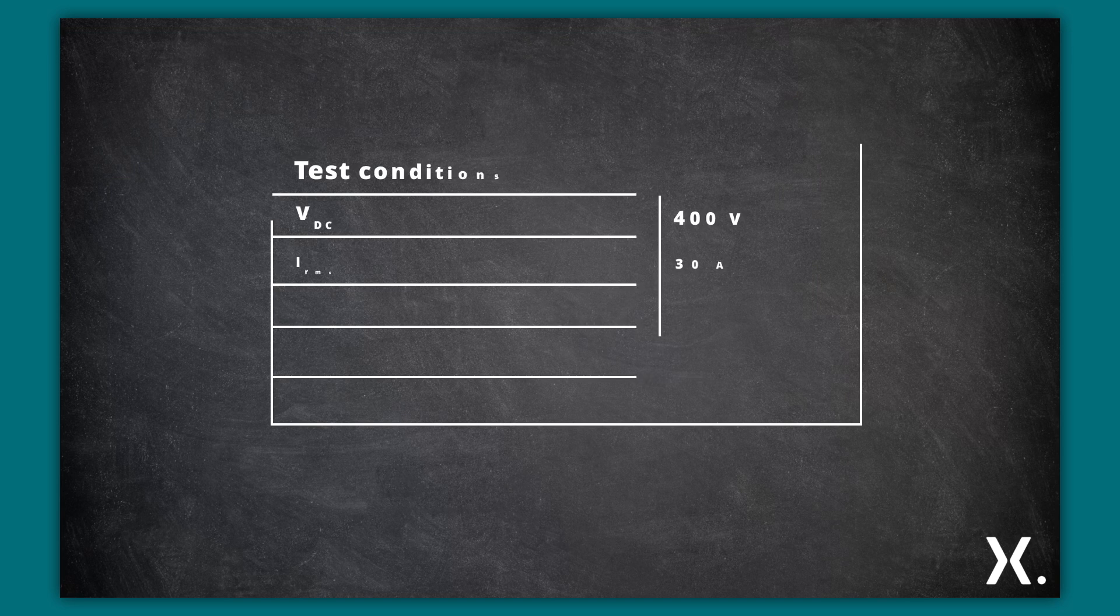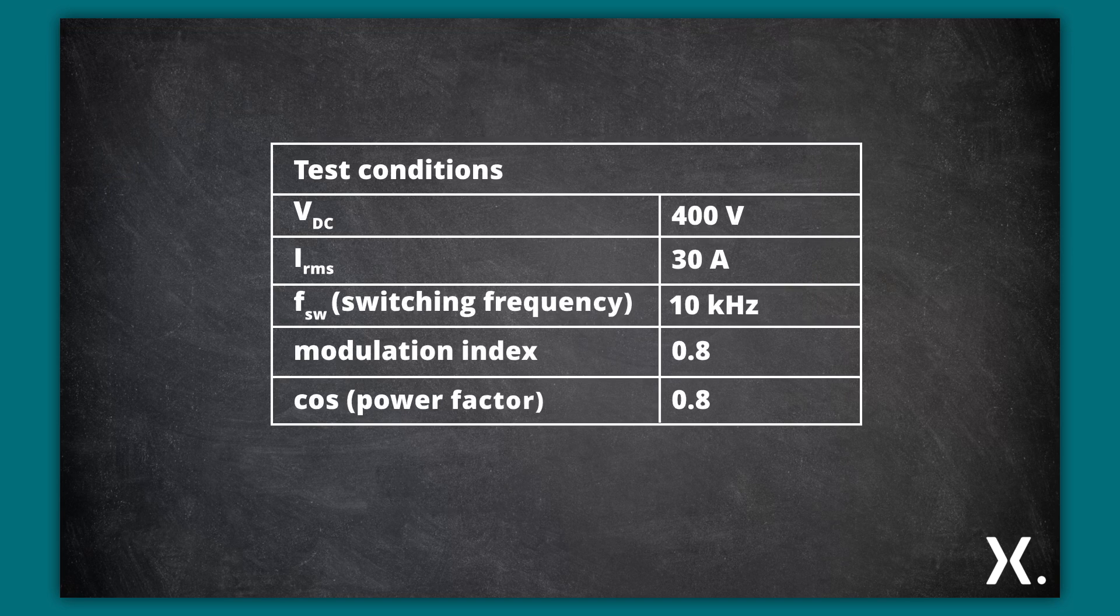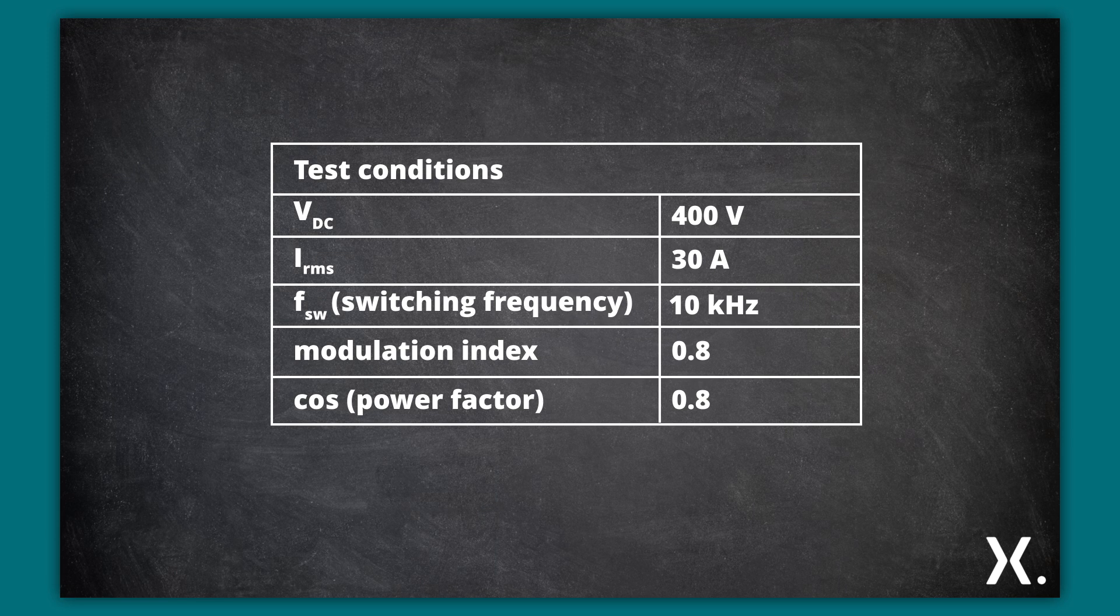To investigate the losses, Nixperia has simulated a motor control setup: a 30 amp motor drive running at 10 kHz and using a 400 volt DC supply voltage.